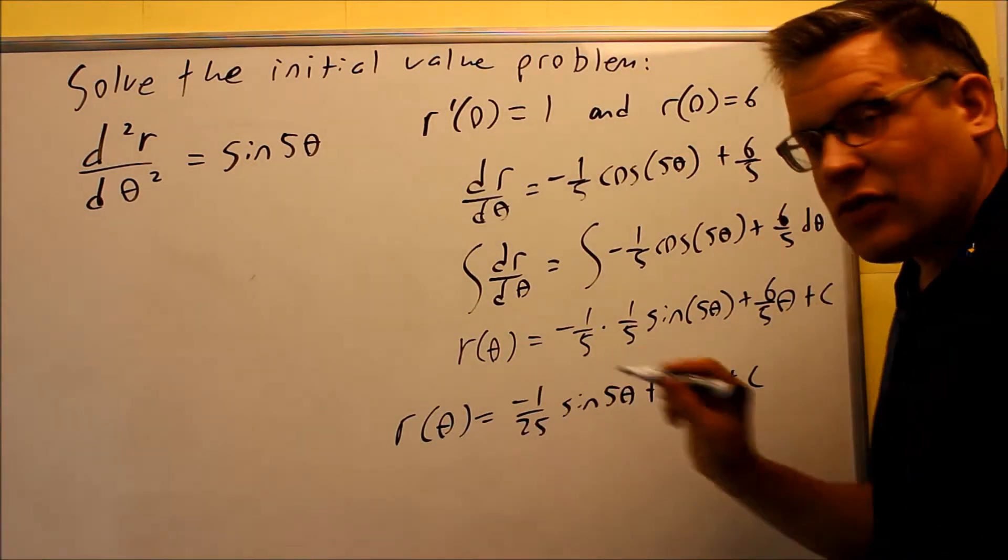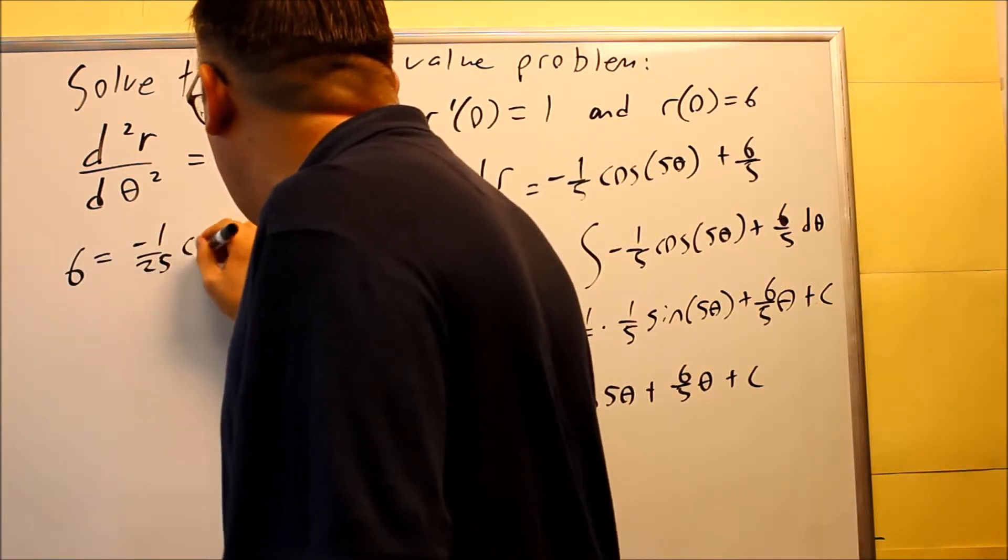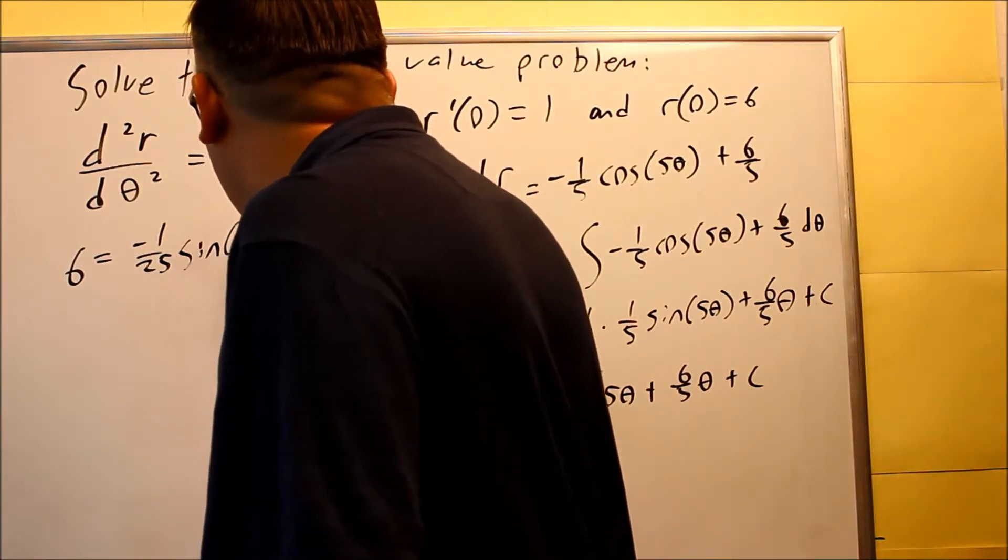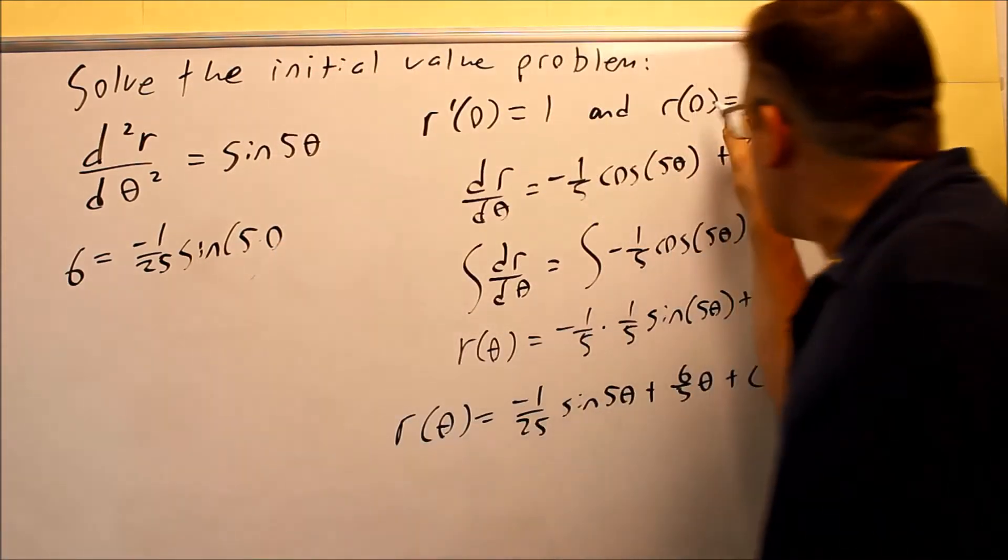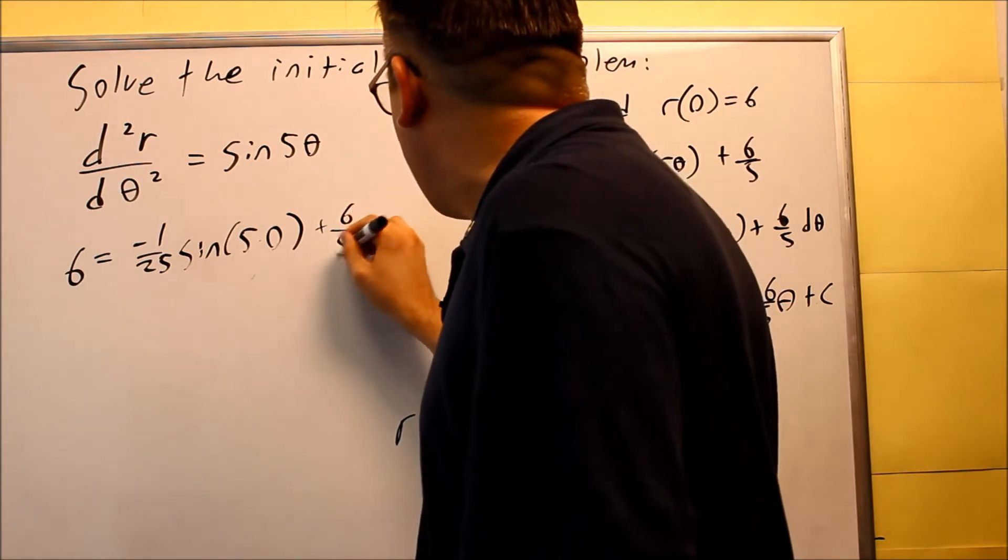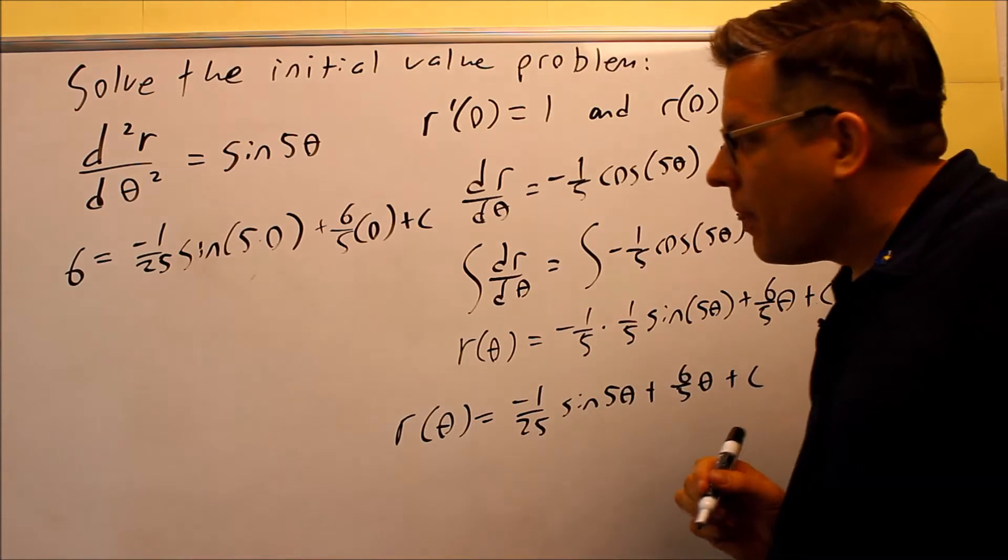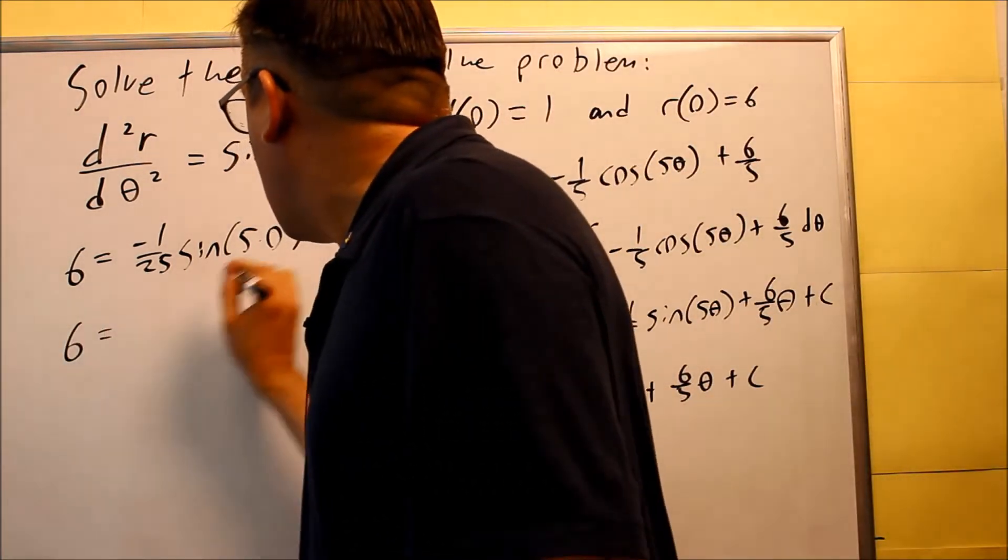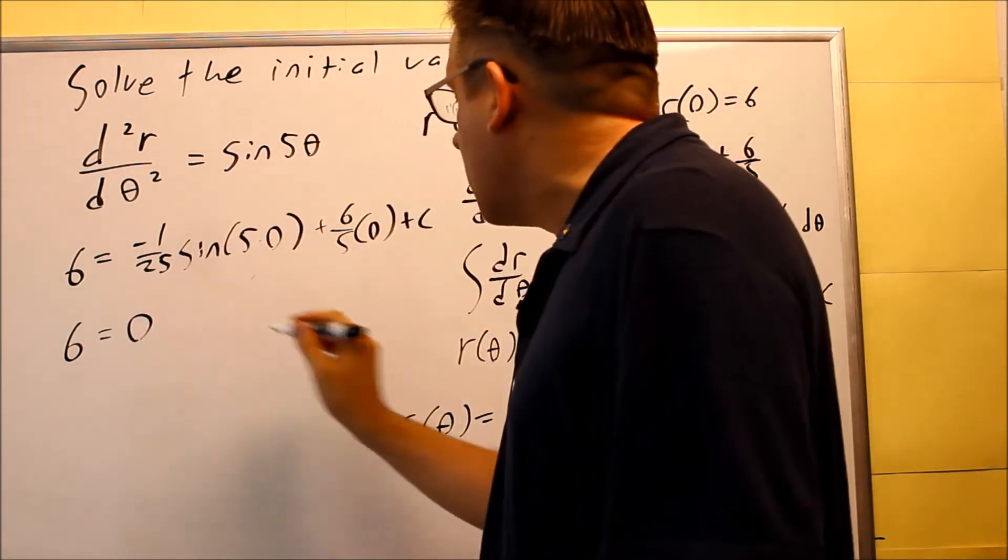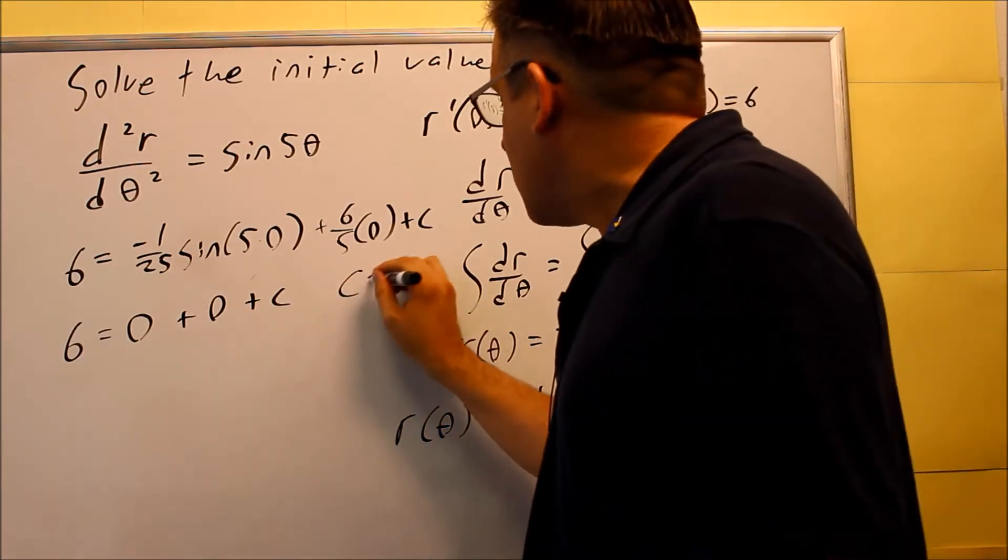The 6 is going to go in on the left-hand side. So I have 6 equals negative 1/25 cosine of 5 times 0, because that's the θ value inside there, 0, and then plus 6/5 and 0 goes in there plus c. Solving this, sine of 0 is 0, so we get a 0 for this whole part here, plus 0 again plus c. That means that our c equals 6.